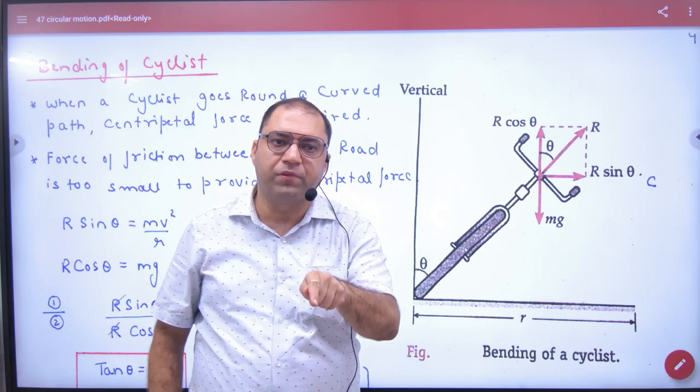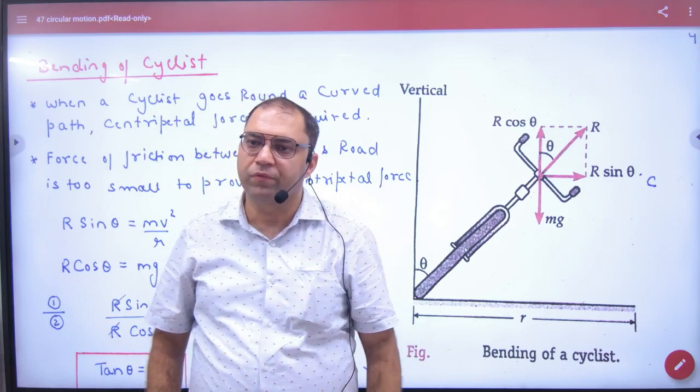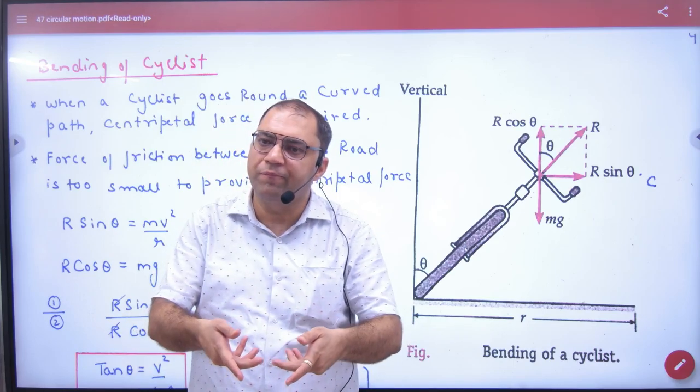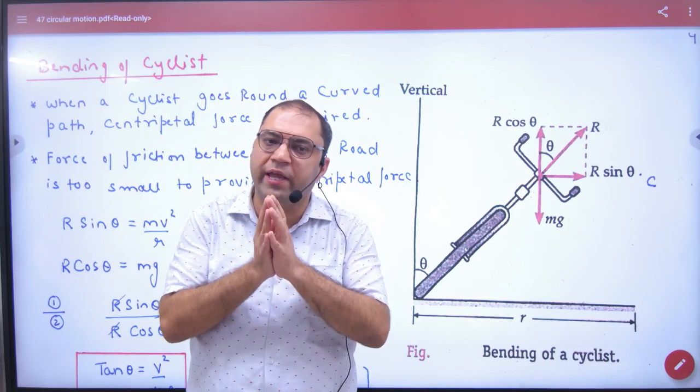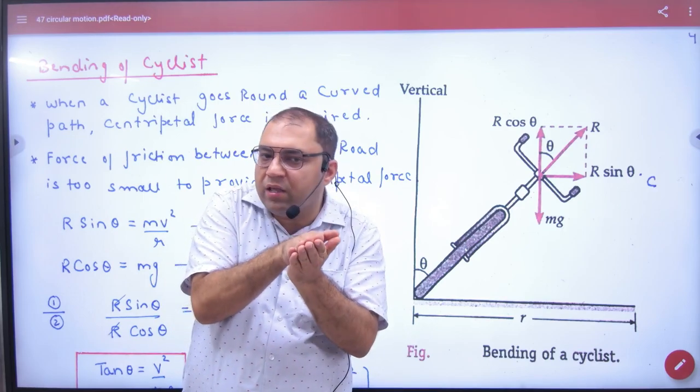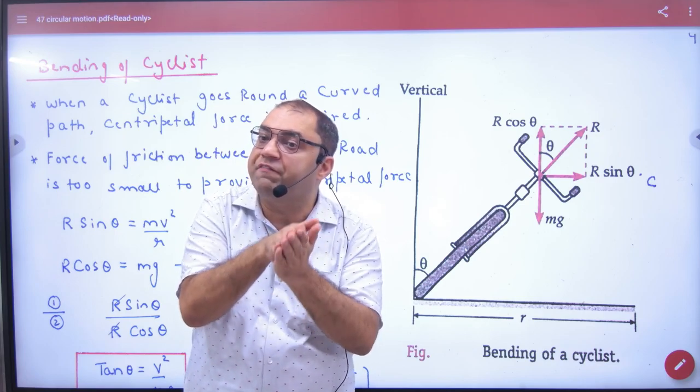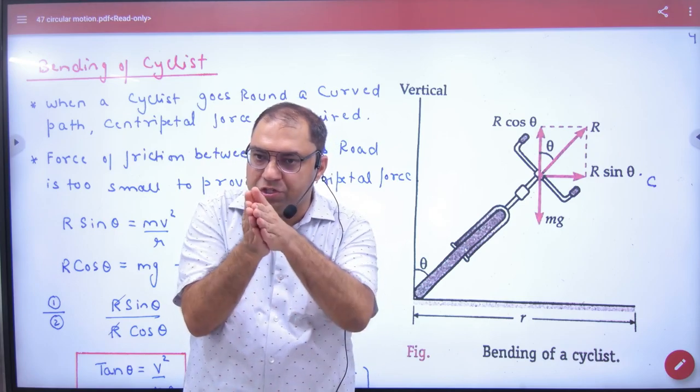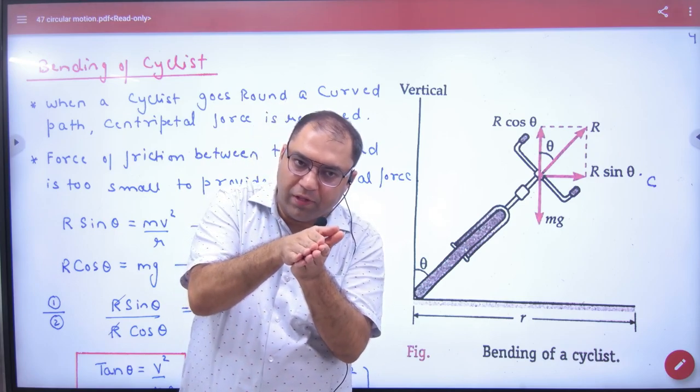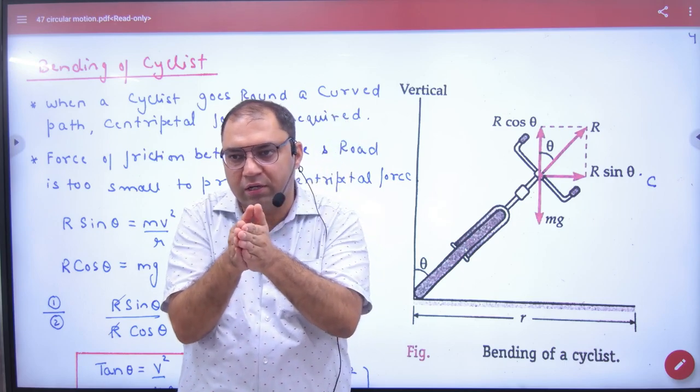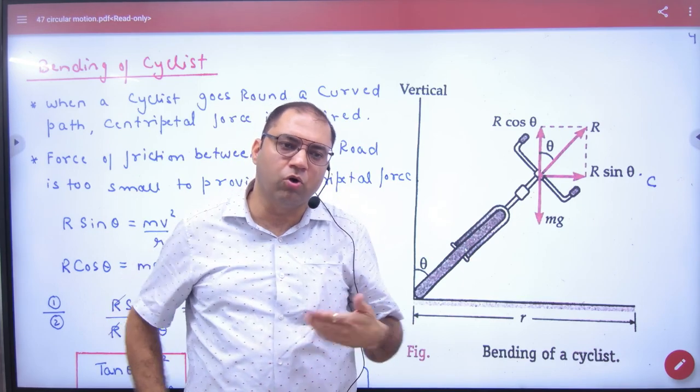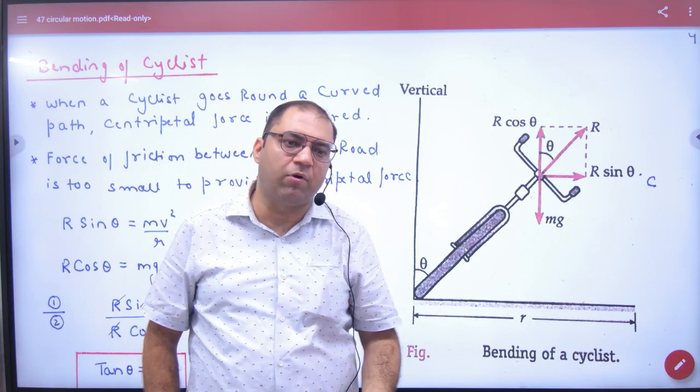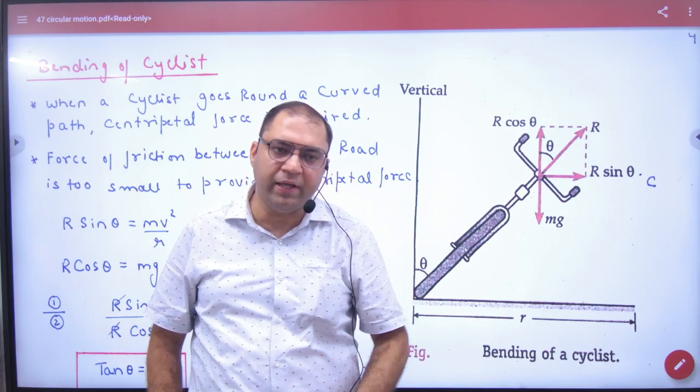If friction is sufficient and bending is also present, the cyclist doesn't need as much bending. If friction is higher, less bending is needed. So two things help provide centripetal force: first, force of friction.